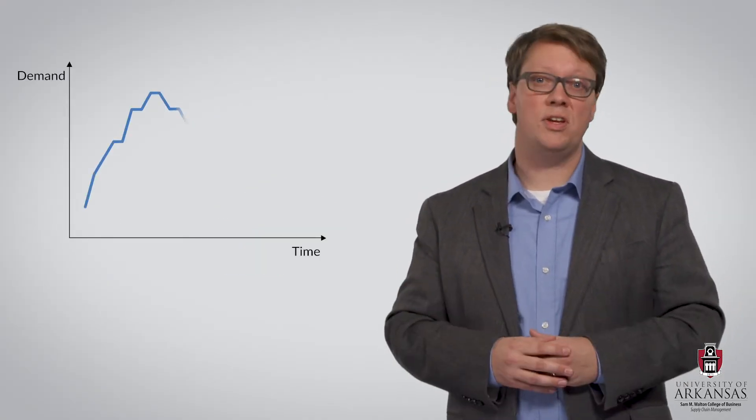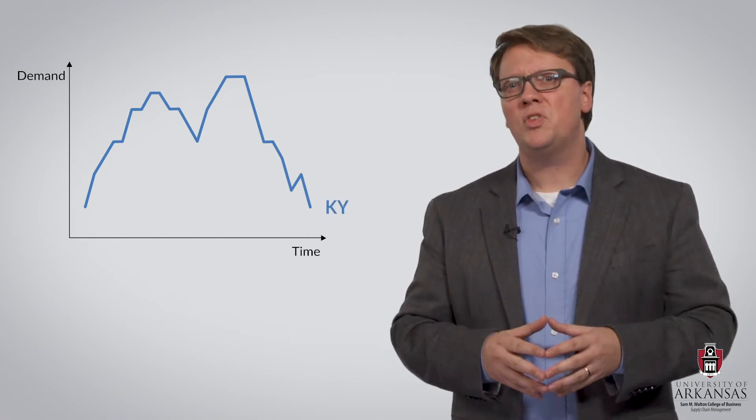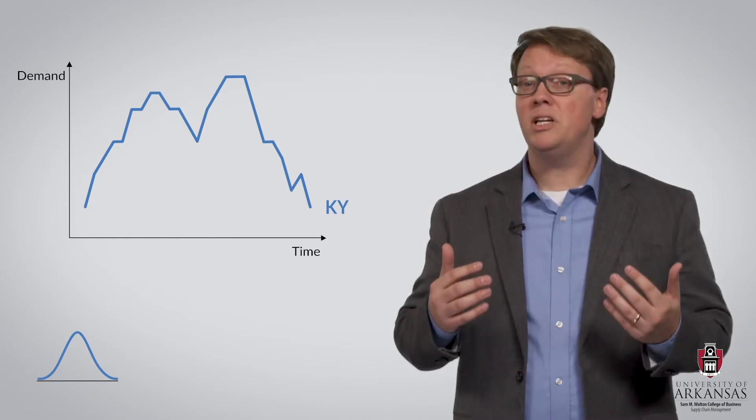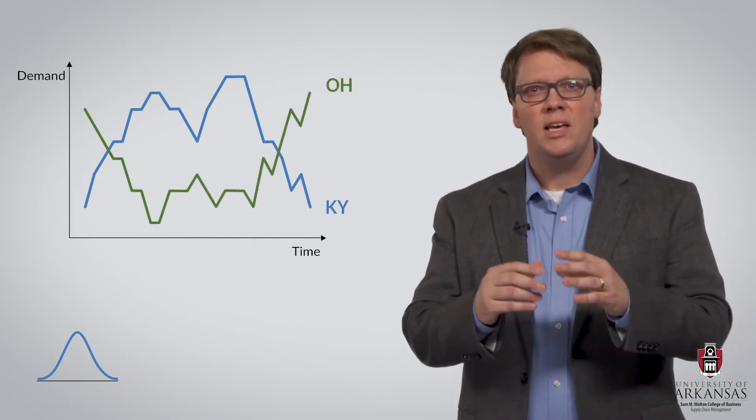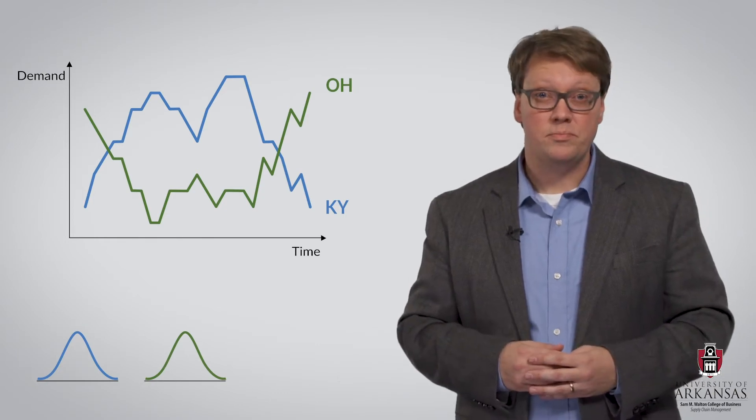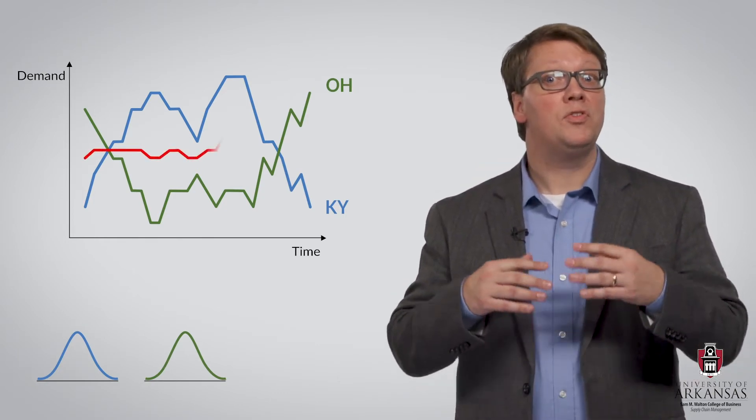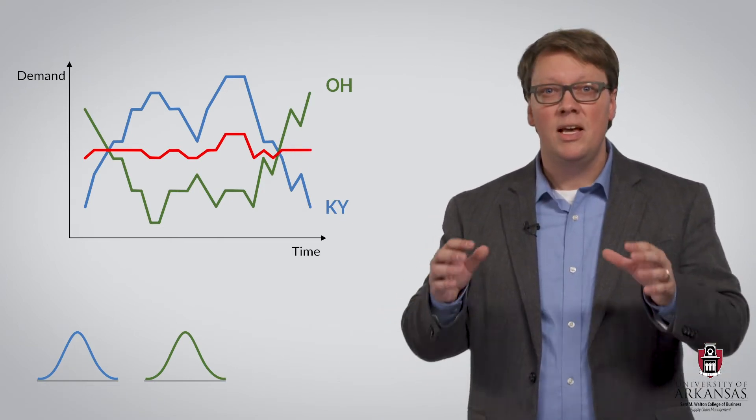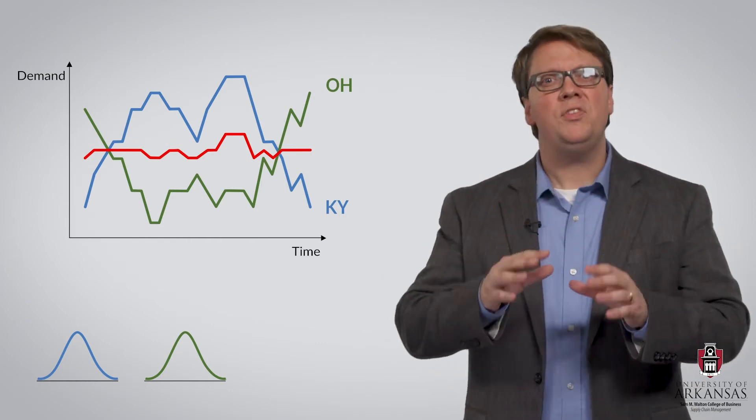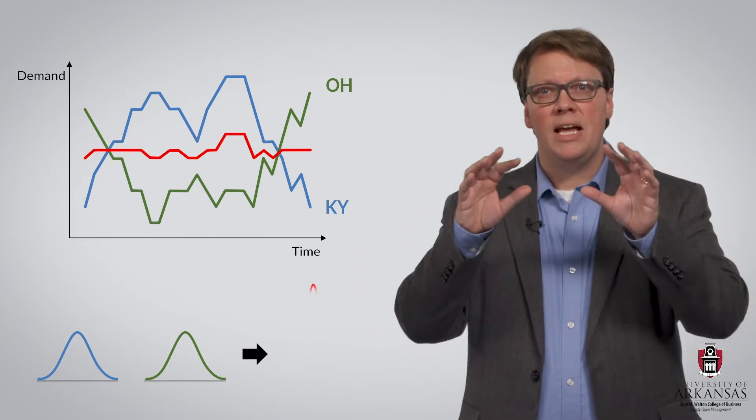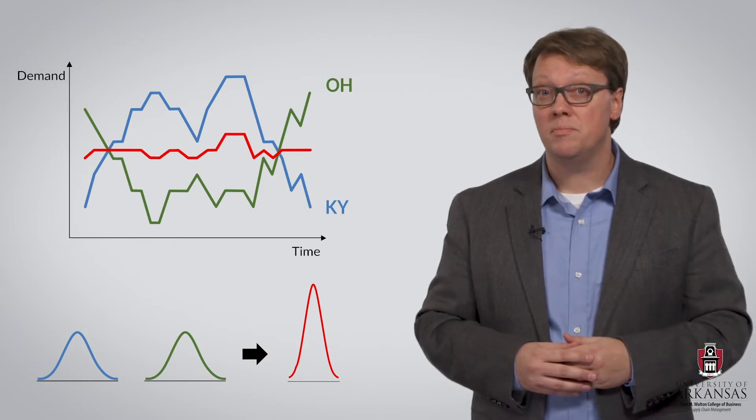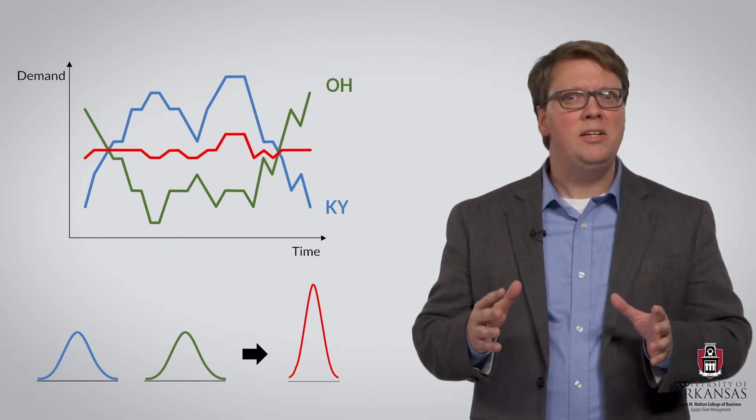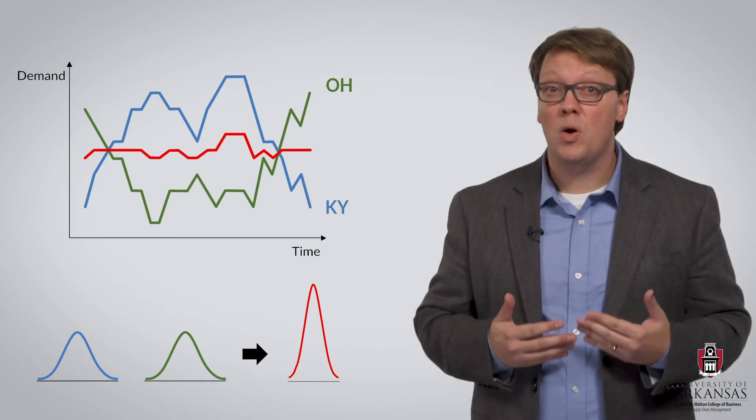Let's look at this demand pattern for the Kentucky DC before DC centralization. As you can see, there is quite a bit of demand variability. And variability means uncertainty. Now let's add demand for Ohio into the mix. Again, we can see that demand varies substantially over time. But now look at what happens if we consolidate the Kentucky and Ohio market areas. As this new red line indicates, much of this variability averages out. And that means that we will have a much skinnier distribution of lead time demand. In other words, there is less risk. And that means lower safety stocks and lower safety stock holding costs.